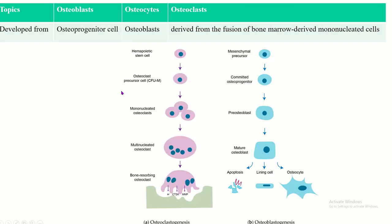The development of the bone cell. Osteoblast and osteocyte development is displayed here. From the mesenchymal cell, the osteoprogenitor cell is developed. From the osteoprogenitor cell, the pro-osteoblast develops, then the mature osteoblast. From the mature osteoblast, the osteocyte is formed.